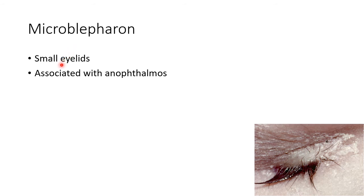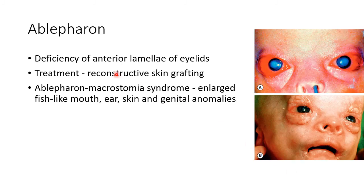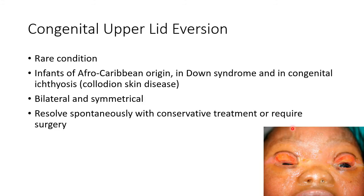Now let us discuss about microblepharon, which means small eyelids. This picture shows microblepharon associated with anophthalmos. Now let us discuss about ablepharon. In ablepharon, there is deficiency of the anterior lamellae of the eyelids. The treatment is by reconstructive skin grafting. There is also ablepharon macrostomia syndrome, which is ablepharon associated with an enlarged fish-like mouth, ear, skin, and genital anomalies. This picture shows ablepharon macrostomia syndrome after treatment with reconstructive skin grafting; note the enlarged fish-like mouth.